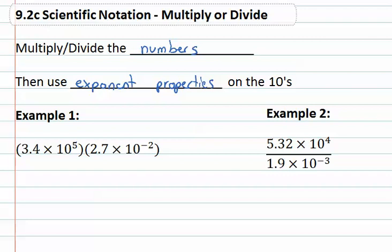So for example, if we have 3.4 times ten to the fifth, times 2.7 times ten to the negative second, we can first multiply the numbers together. Might be nice to use a calculator for this step. 3.4 times 2.7 and we end up with 9.18.